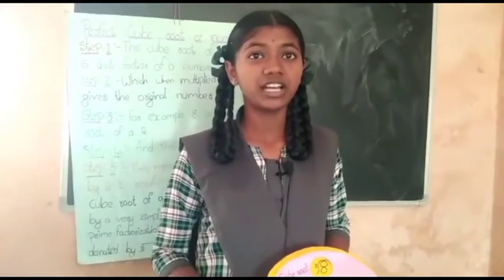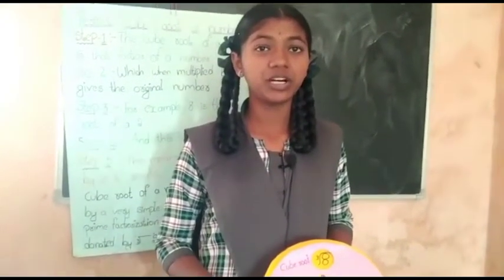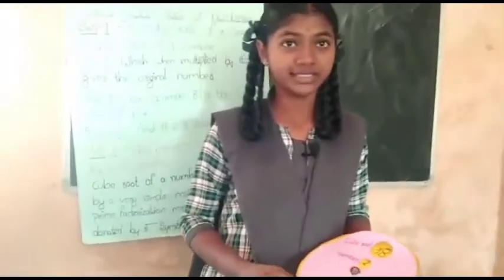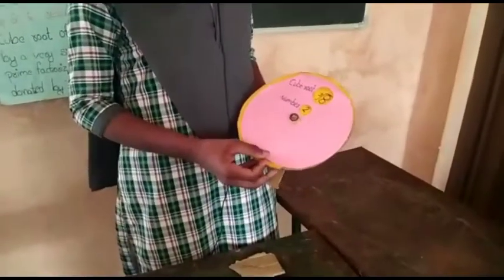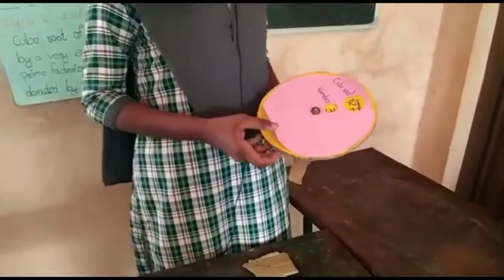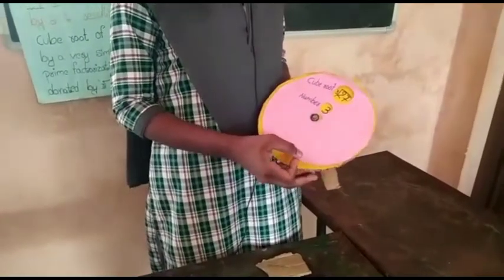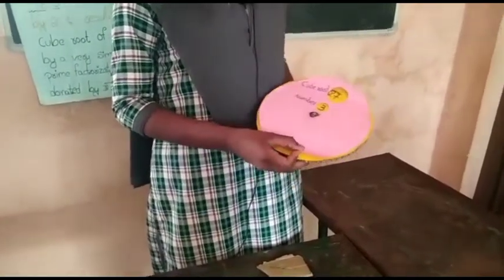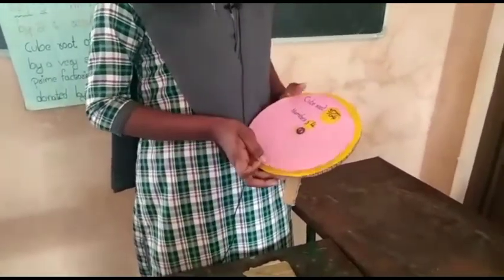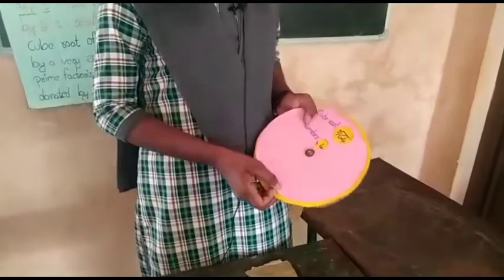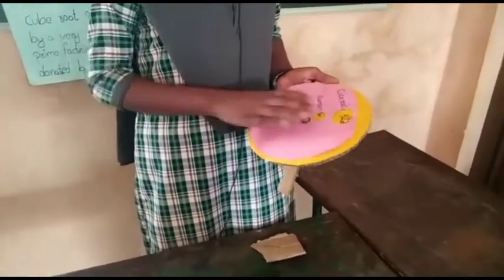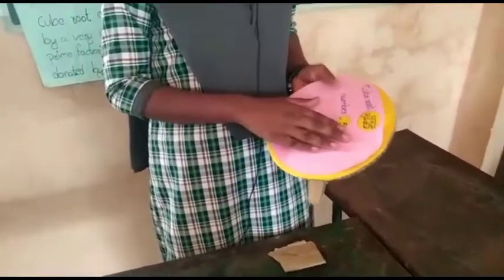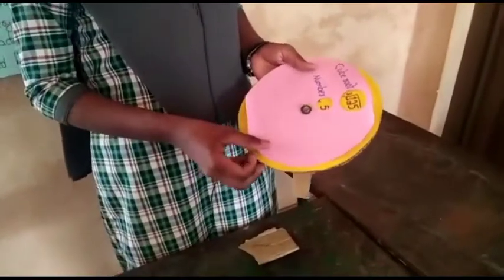Each cube root is denoted by the cube root symbol. Here are some examples: cube root of 8 is equal to 2, cube root of 27 is equal to 3, cube root of 64 is equal to 4, cube root of 125 is equal to 5.